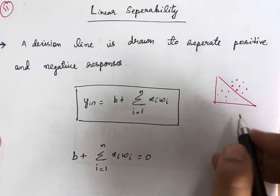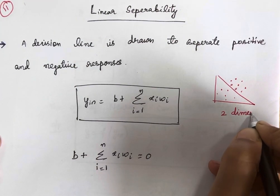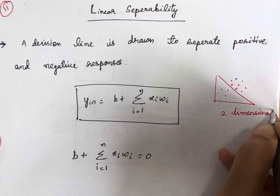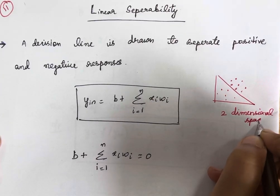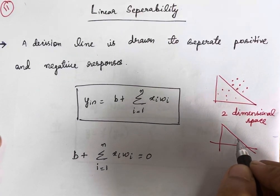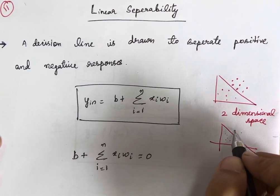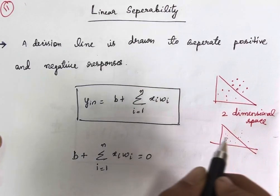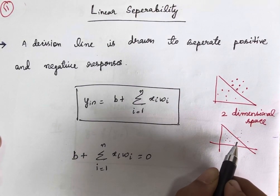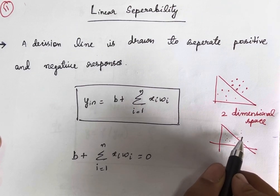For example, if you have a two-dimensional space, you will use a line which will separate the points from one class to another class. In one class you have red points, and in another class you have blue points. So there is a line which will separate the red points from the blue points.